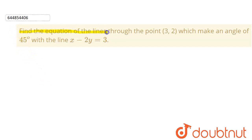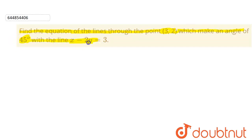Hello students. In this question we have to find the equation of the line through the point (3, 2) which makes an angle of 45 degrees with the line x minus 2y equals 3.